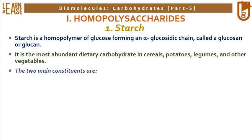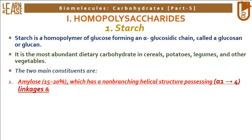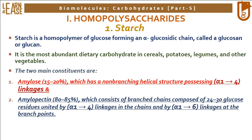The two main constituents of starch are: first, amylose, which constitutes 15–20% of starch and has a non-branching helical structure possessing alpha-1-4 linkages.